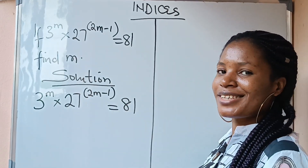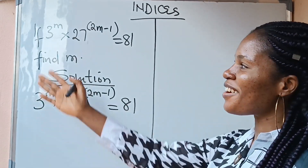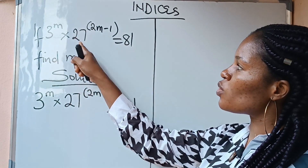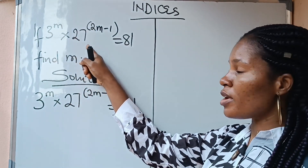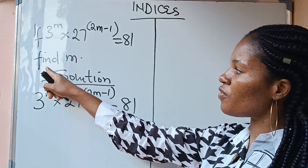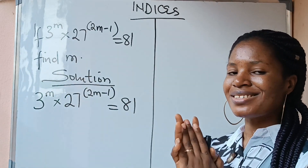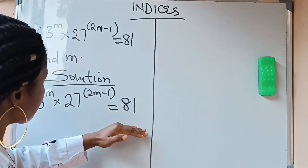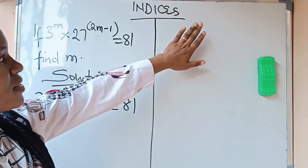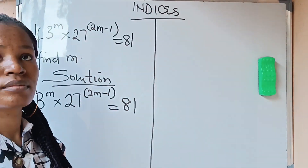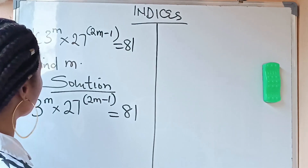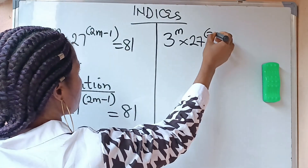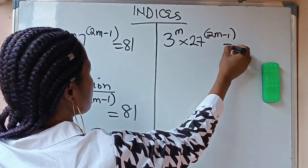Hello everybody, compliments of the CC. Let's solve this — it's under indices. We are asked that if 3 raised to the power of m, times 27 raised to the power of 2m minus 1, is equal to 81, find the value of m. Let me write it here so everybody will see it: 3 raised to the power of m, times 27 raised to the power of 2m minus 1, is equal to 81.